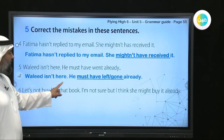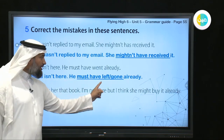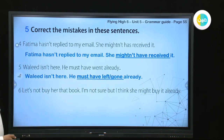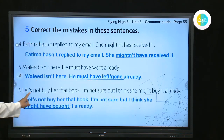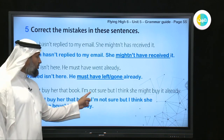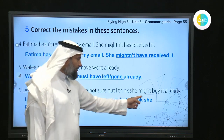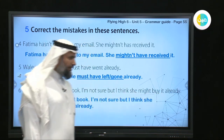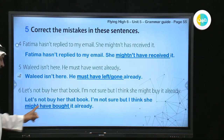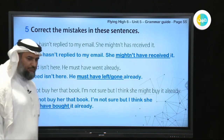Fifth: 'Waleed isn't here — he must have left or gone.' Use the past participle — that's correct. Sixth: 'Let's not buy her that book — I think she might buy it earlier.' The correction is: 'She might have BOUGHT it earlier.'